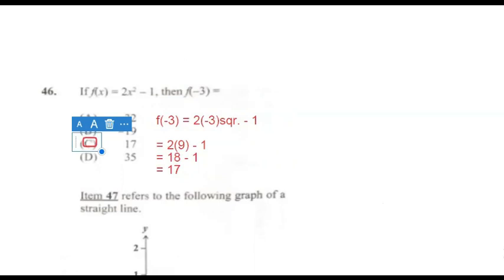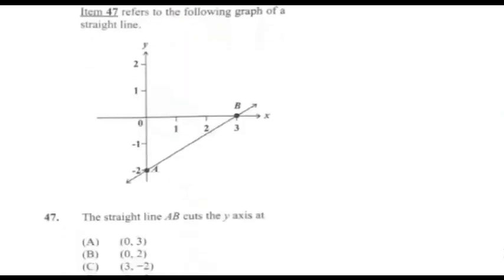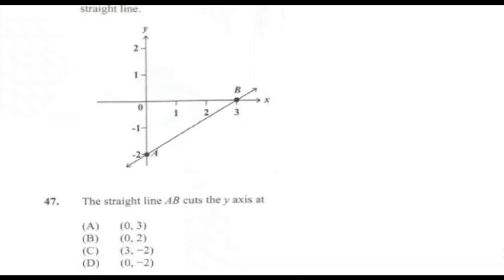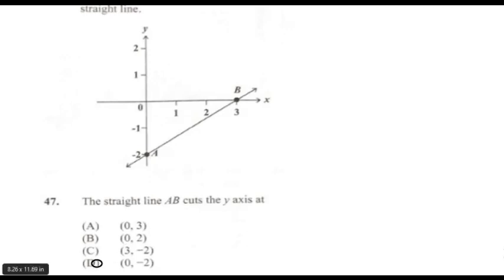Question 47: The straight line AB cuts the y-axis at point A. Remember when reading coordinates we read the x-axis value first, then the y-axis value. This point is (0, −2). Answer for 47 is D.